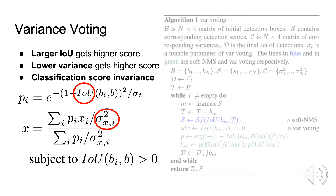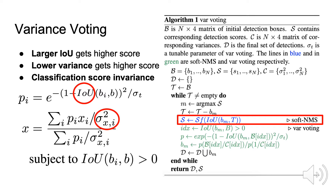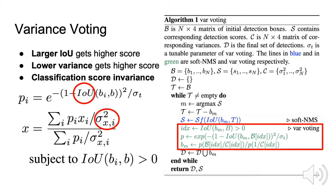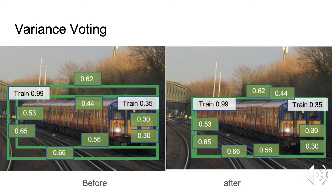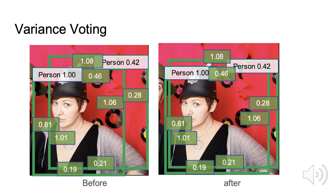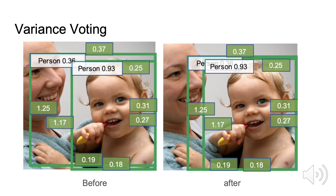Variance voting can be applied after the soft NMS process. As shown in the visualizations, before voting, the bounding box with very high confidence (99%) is not well localized. After voting, it is attracted to the accurate bounding box, even though that accurate bounding box has as low a classification score as 35%.